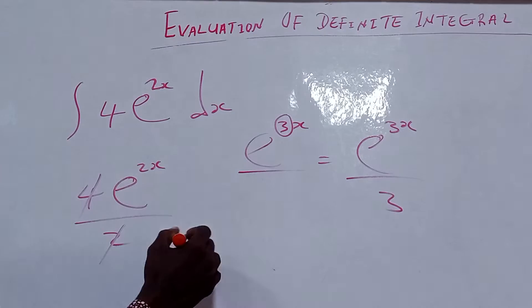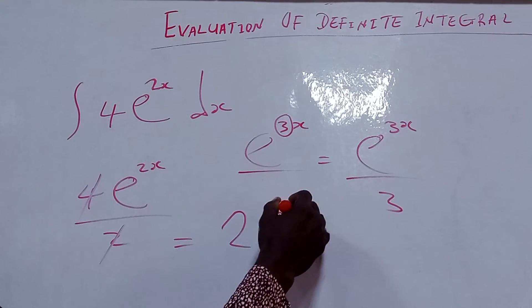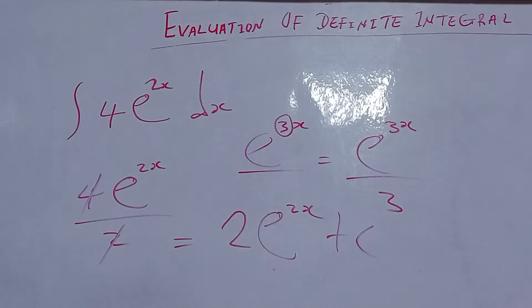So this one you can see. So our answer now equal to 2 exponential 2x plus c. That is how to integrate our value.